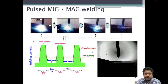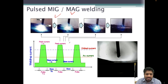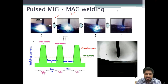Gas metal arc welding (MIG/MAG) can also be used in pulsed mode to enhance weld bead quality and improve the deposition characteristics of the weld.